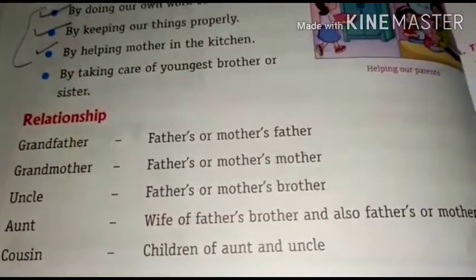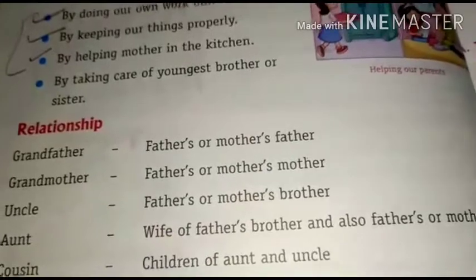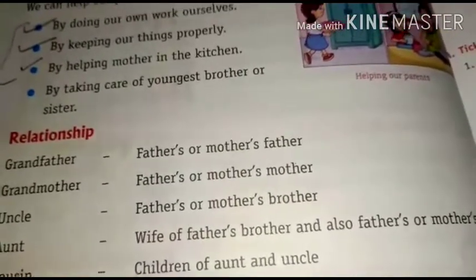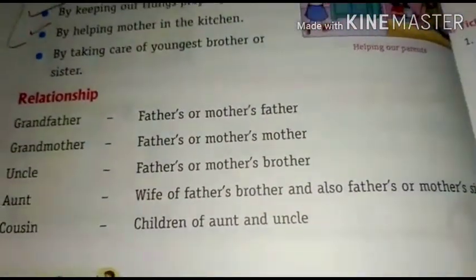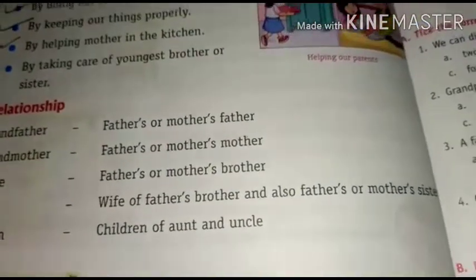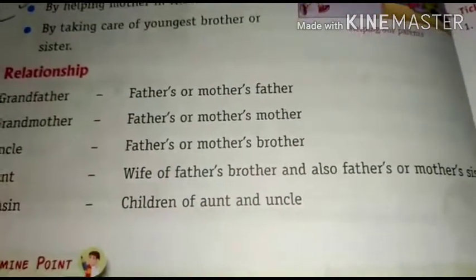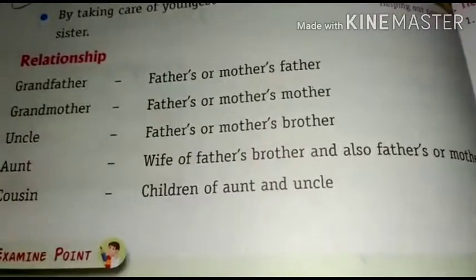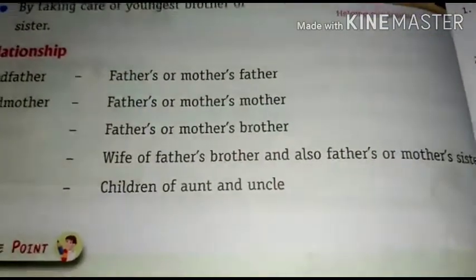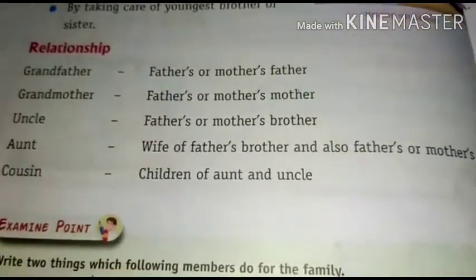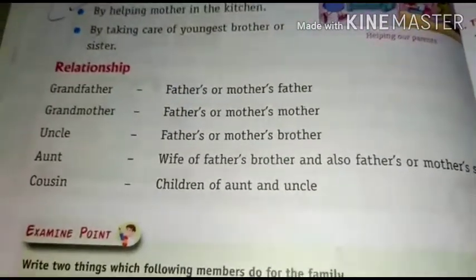Aunt means the wife of father's brother — your chaachi — or father's or mother's sister. Cousin means the children of your aunt and uncle — your uncle and aunt's son and daughter are your cousins.